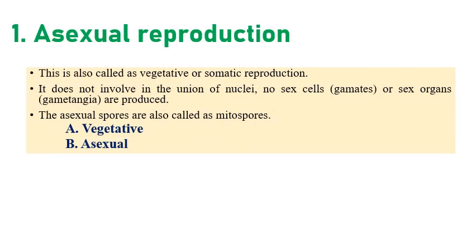Asexual reproduction is also called vegetative reproduction or somatic reproduction, where no sex cells are involved. This asexual reproduction is of two types: vegetative reproduction and asexual spore reproduction. Both are under the broader asexual category, divided further for convenience into vegetative and asexual sub-types.